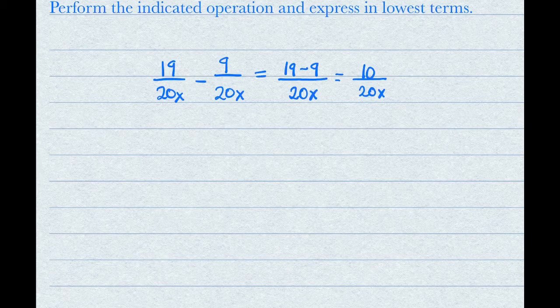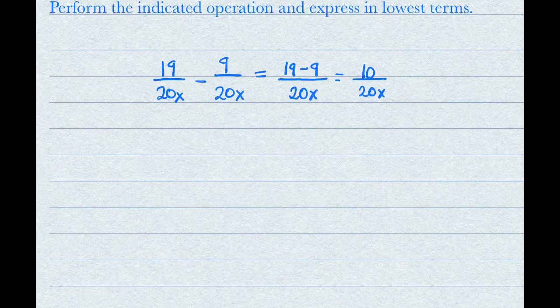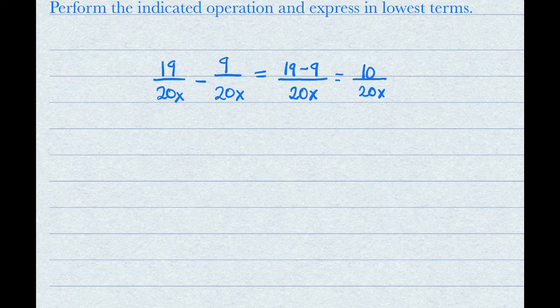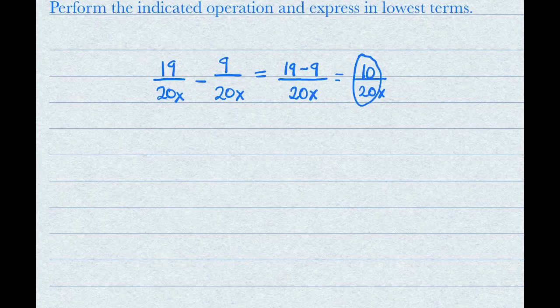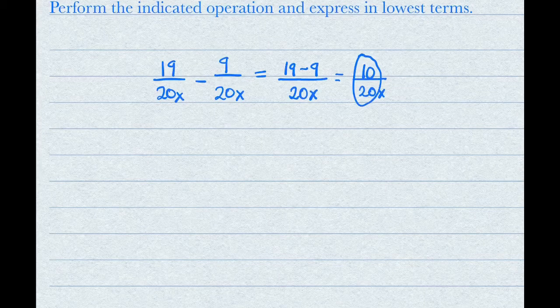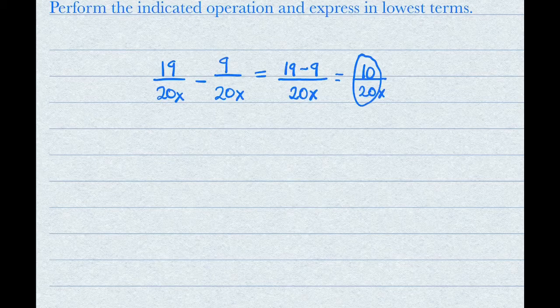And now, since you have to find lowest terms, you want to see if you can reduce the coefficients. So in this case, you're just looking at the 10 and the 20. You want to see what you can divide them by to get them into lowest terms.